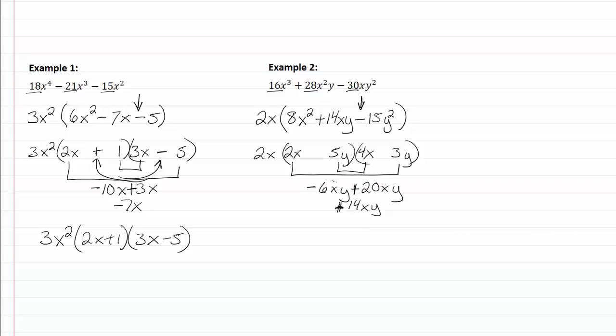A positive 20. So my negative goes here, my positive goes here. So now this trinomial fully factored is going to be 2x times 2x plus 5y times 4x minus 3y.